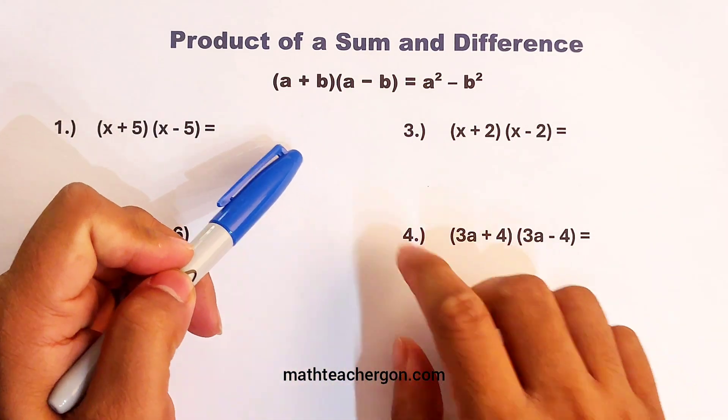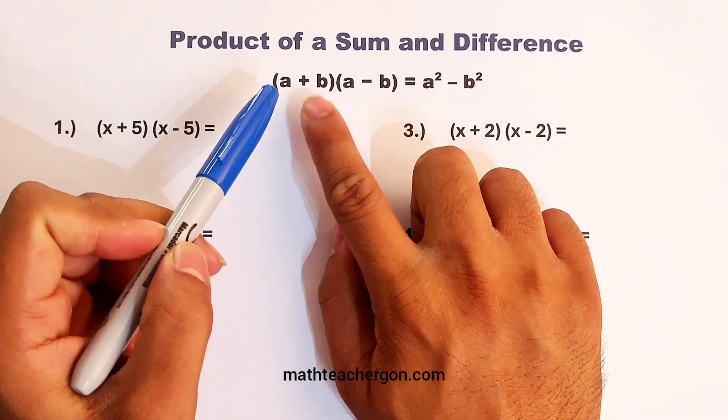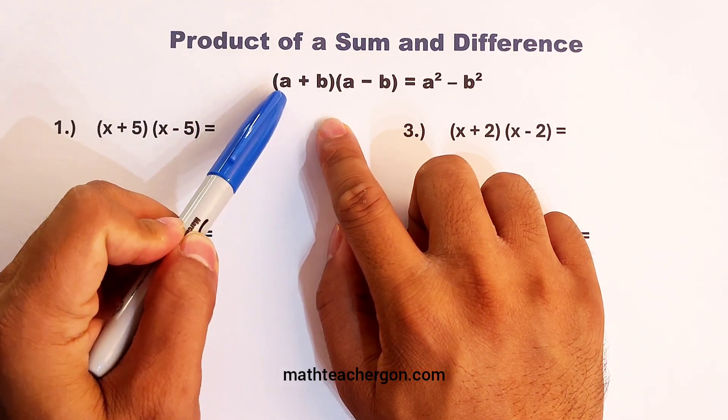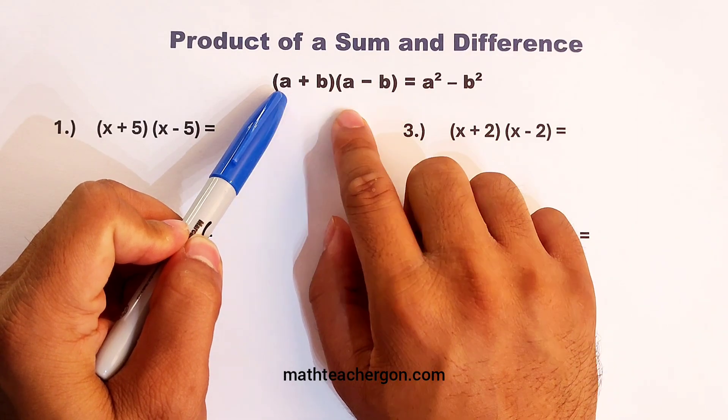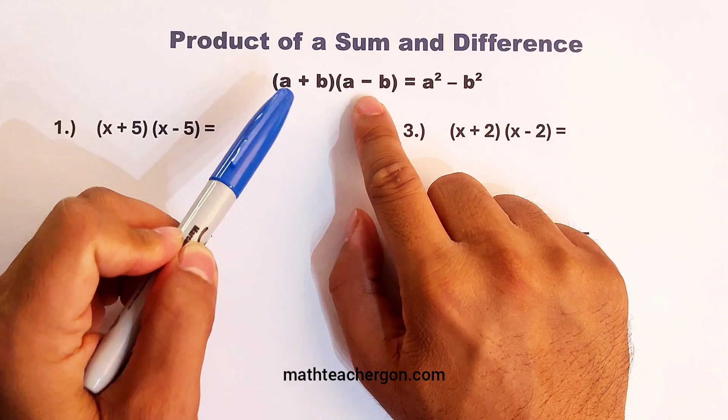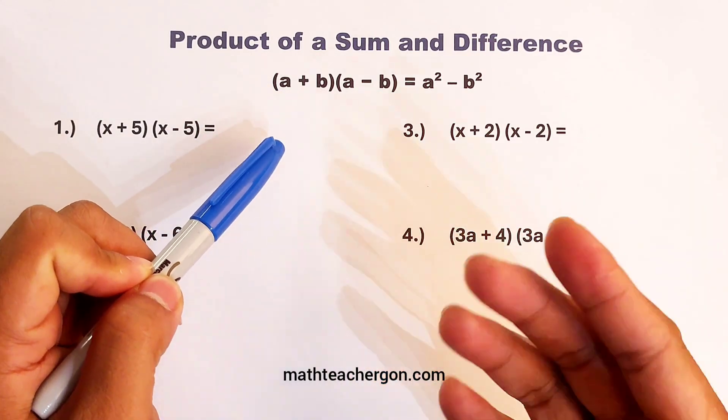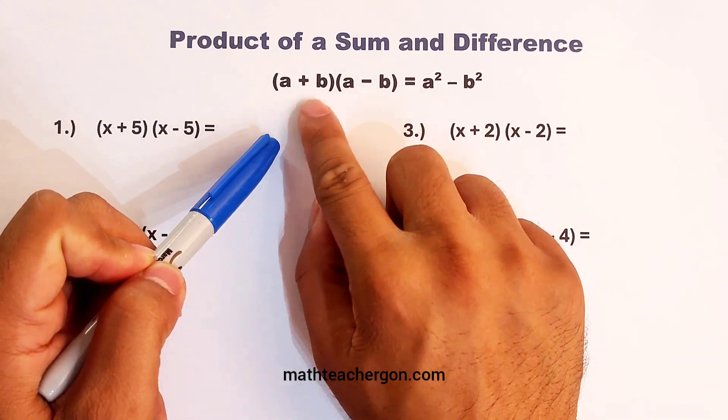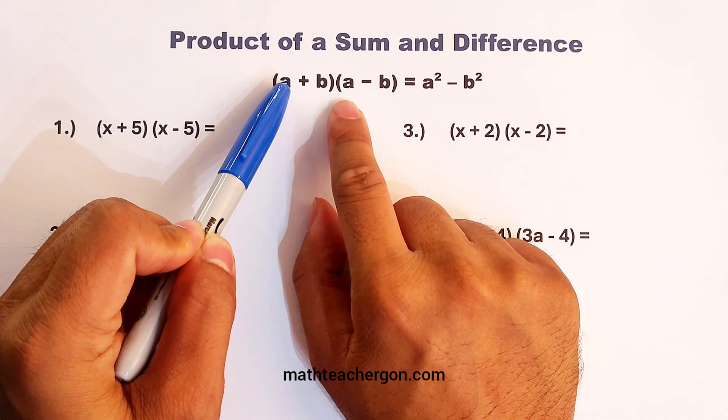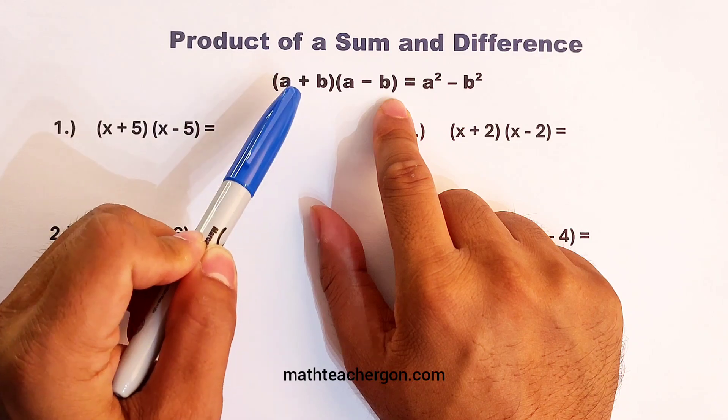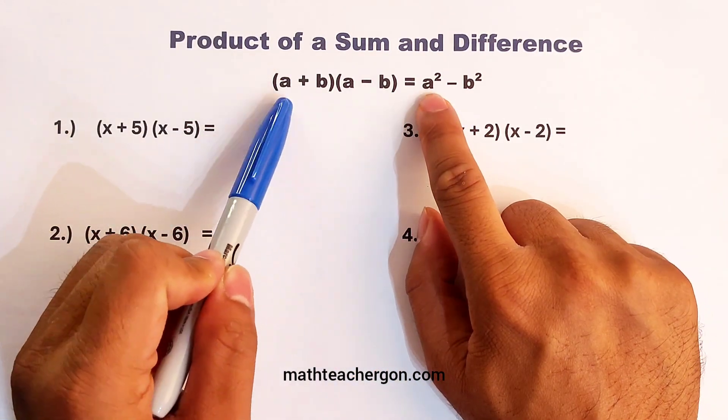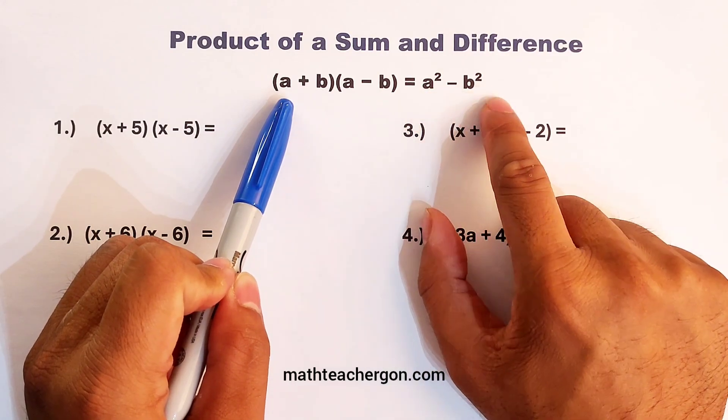So what we have here are two binomials, and as you can see, these are called the sum and difference. Look at this first one, we have a plus b, which is the sum, a minus b, which is the difference. The first and the second terms are the same. And when you are multiplying this kind of binomials with the same first terms and the last terms and has plus and minus, their product is simply squaring the first term minus squaring the last term.